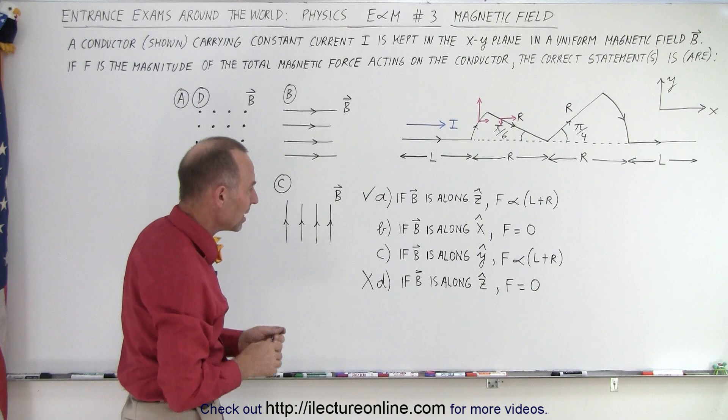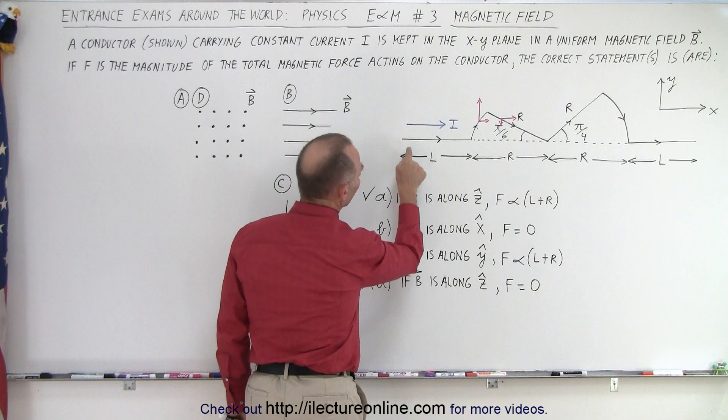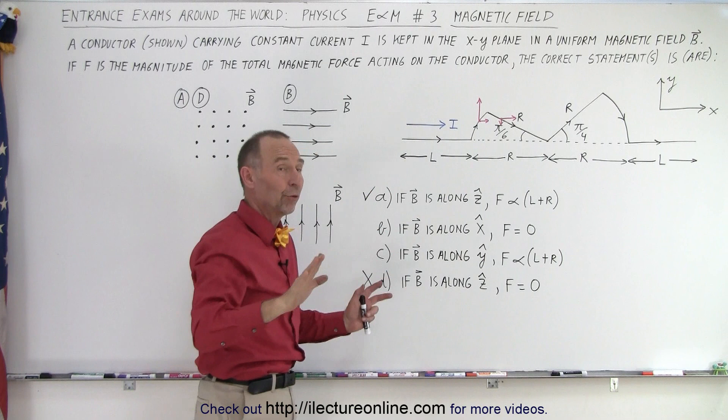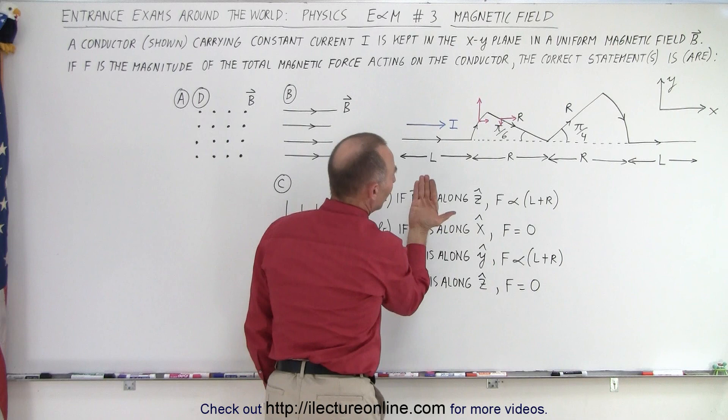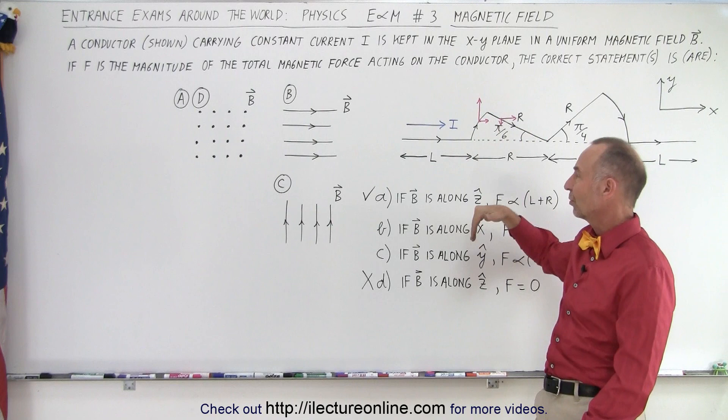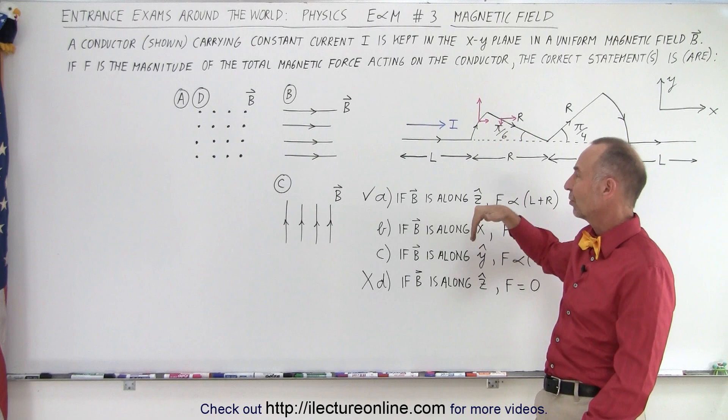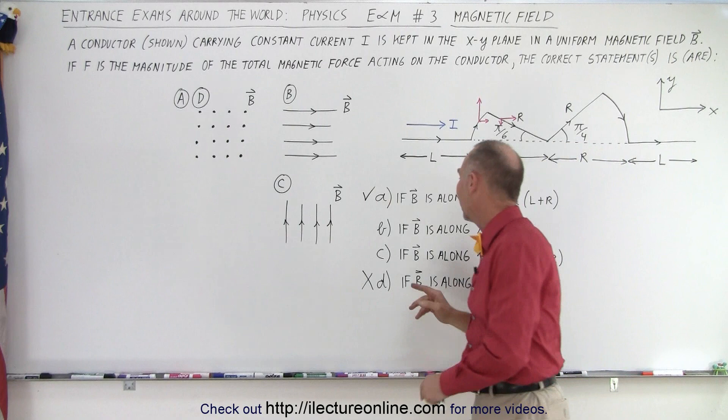How about statement B? If the magnetic field is along the X-axis, notice that if the current is in the same direction as the magnetic field, there's no force. On the horizontal component of the arc, there's no force. On the vertical component — as the current goes up, the force is into the board, and as the current goes down, the force is out of the board. They negate each other, so therefore the total force is zero when B is along the X-axis.